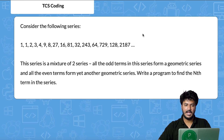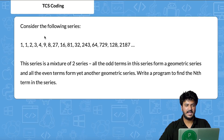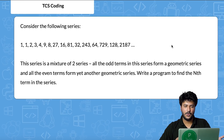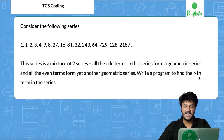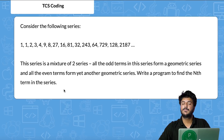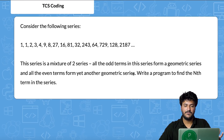This is the first question: consider the following series — 1, 1, 2, 3, 4, 9, 8, 27. You have to decode this series; it is a geometric progression. They will ask you to print the nth term in the series — for example, print the 11th term.